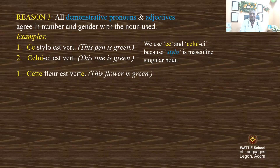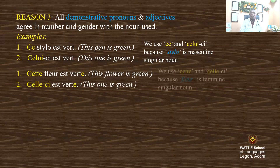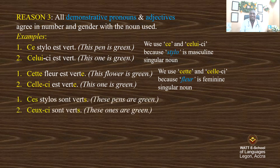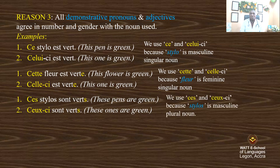'Cette fleur est verte' — C-E-T-T-E. This flower is green. We use 'cette' because flower is feminine singular. 'Ces stylos sont verts' — these pens are green. This is the plural of the first example. We use 'ces' because stylo is masculine plural. 'Ceux-ci sont verts' — these ones are green.